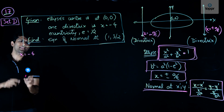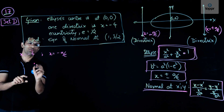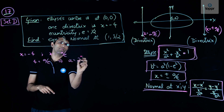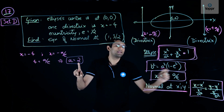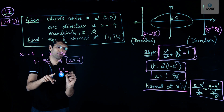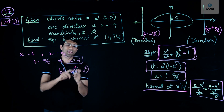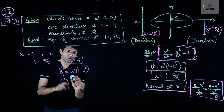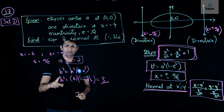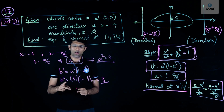Comparing x = −4 with x = −a/e, we get a/e = 4. Since eccentricity e = 1/2, we find a = 2, so a² = 4. To find b, we use the formula b² = a²(1 − e²). Substituting a² = 4 and e = 1/2, we get e² = 1/4, so b² = 4 × (1 − 1/4) = 4 × 3/4 = 3.